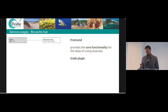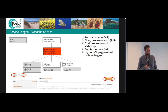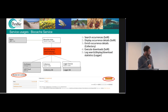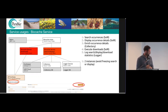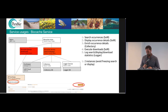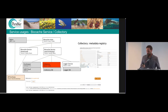The Biocache Service is the heart of the application — it enables searching occurrences, displays occurrence details, and goes to the Collectory to enrich those details. We can execute downloads as well, and we log all search, display, and download statistics. Interestingly, we have two instances of the Biocache Service: one instance handles search and display, and one instance handles downloads. This avoids freezing search or display when there are a lot of downloads going on.